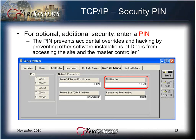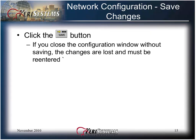For optional security, you can enter a PIN number in the PIN number field. The PIN can only be changed when connected to the master controller. When all the information is entered, click the Save button. If you close the window without saving, your changes will be lost. After you select and save the communication settings, close and reopen the DOORS program. This concludes Module 3 of 16: Set Network Configuration.